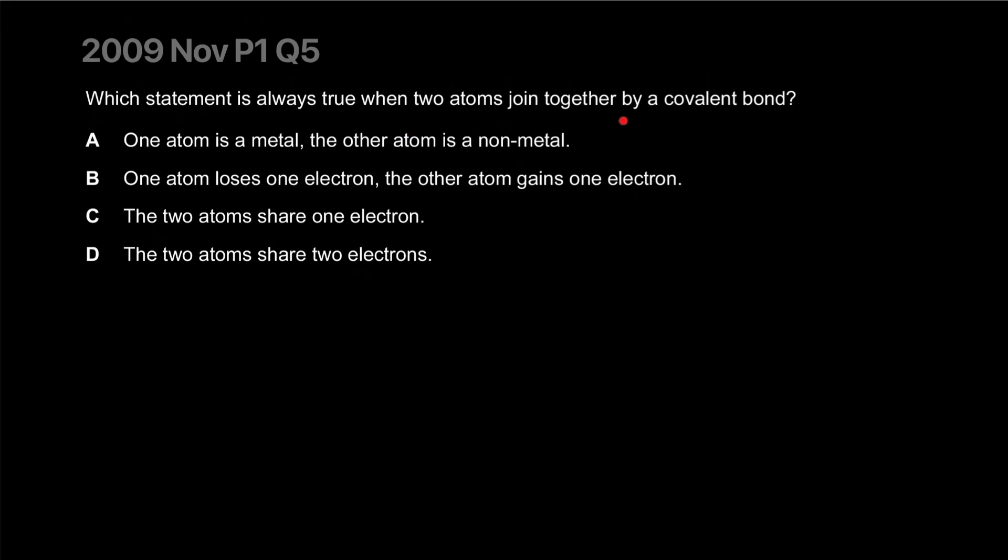Which statement is always true when two atoms joined together by a covalent compound? One atom is a metal, the other is a non-metal. Let's think of some covalent compounds - SiO2, CH4 - these are covalent compounds, none of them are metals. It's actually the opposite, it's between two non-metals. One atom loses one electron, the other gains one electron? It's actually sharing. It's called covalent because they're cooperating, so that's where the 'co' comes from, and the 'valent' comes from the valence electrons. The two atoms share electrons. That's what D is - they both share it. Correct answer is D.